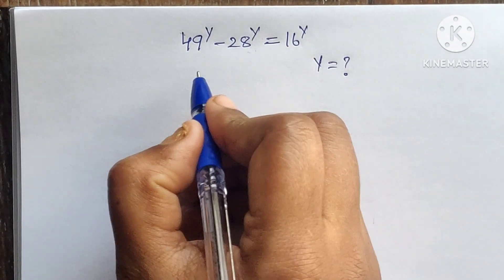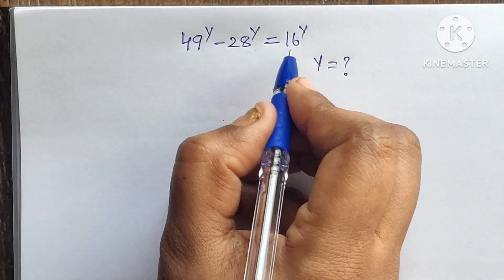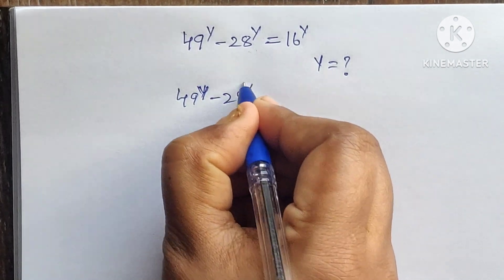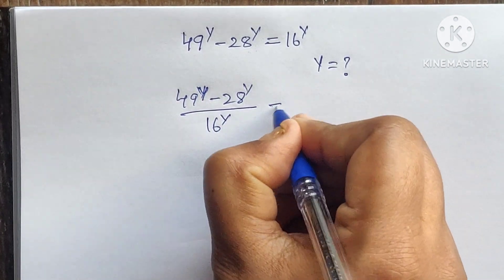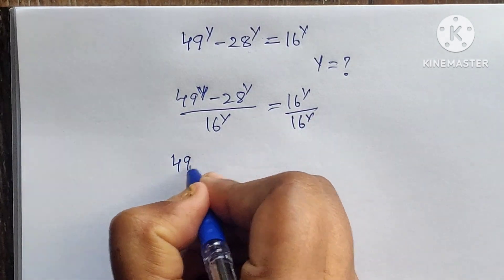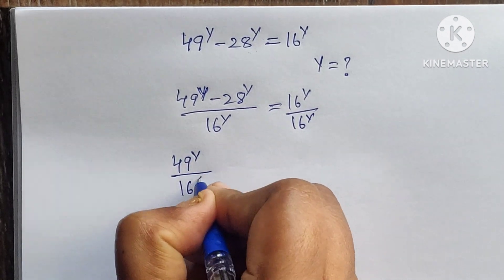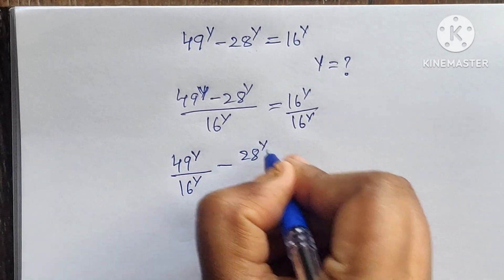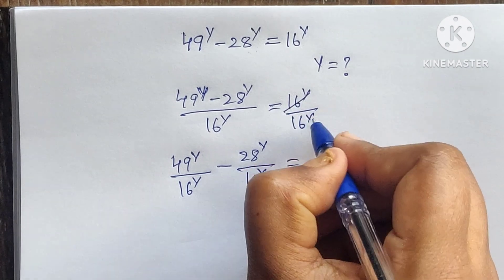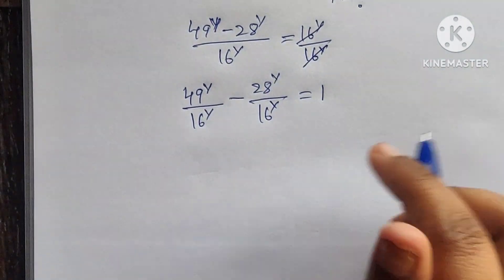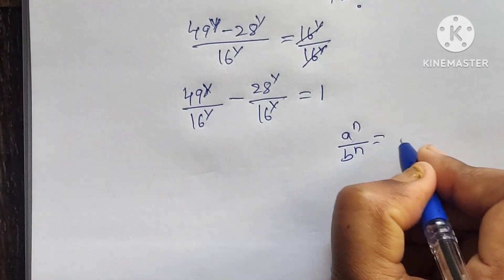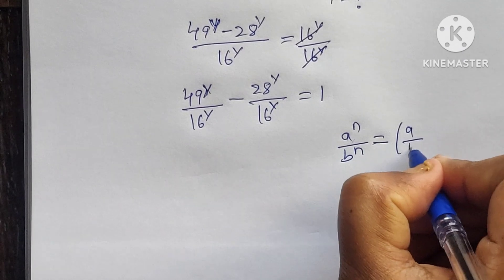Let's see. First we will divide by 16 to the power of y on both sides: 49 to the power of y minus 28 to the power of y divided by 16 to the power of y equals 1. So 49 to the power of y divided by 16 to the power of y minus 28 to the power of y divided by 16 to the power of y equals 1. Using the formula: a to the power of n divided by b to the power of n equals (a divided by b) whole to the power of n.